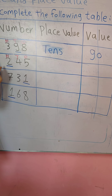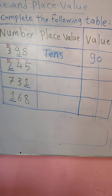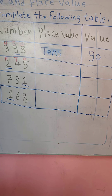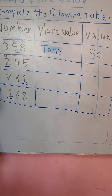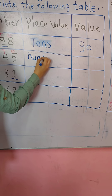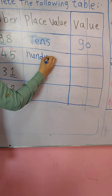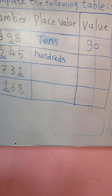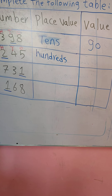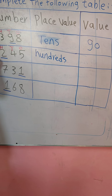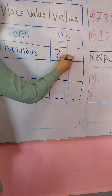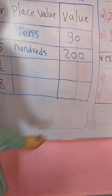Here I have 245. I'll write H, T, O. I need the place value of number 2. Number 2 is in H (hundreds), so the place value is 100th (hundreds). The value of number 2 — 2 is in the hundreds place, so I write 2 with two zeros: the value is 200.